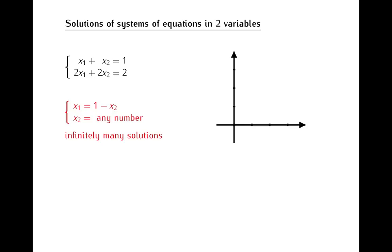We can look at the geometry behind this system. Since these two equations are multiples of each other, the graph of the first equation and the graph of the second equation are actually the very same line. So the geometric picture of this system is two overlapping lines. This coincides with the fact that we have a system with infinitely many solutions: each solution corresponds to one point of intersection of these lines, so the lines must intersect in infinitely many points, and if lines intersect in more than one point, they must overlap.